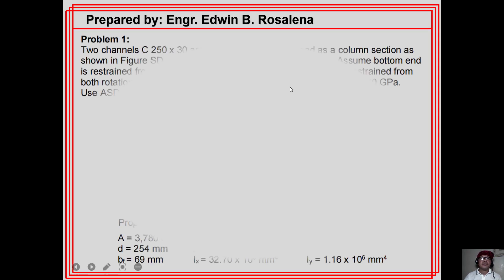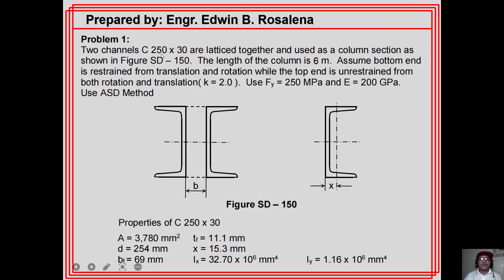Problem number one: two channels C 250 by 30 are latticed together and used as a column section as shown in figure SD-150. The length of the column is 6 meters. The bottom end is restrained from translation and rotation, while the top end is unrestrained from both rotation and translation, with K value equal to 2.0. Use Fy equal to 250 MPa and E equal to 200 GPa. Use ASD method of analysis.